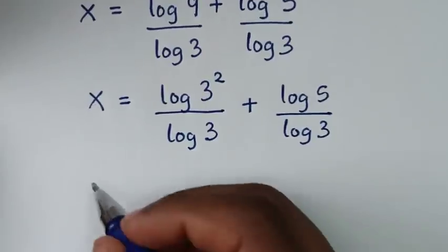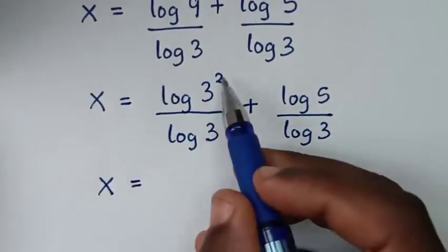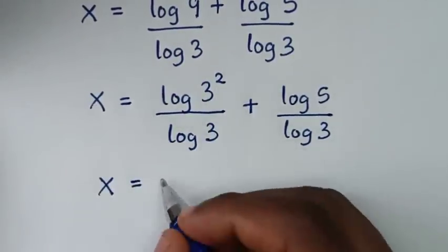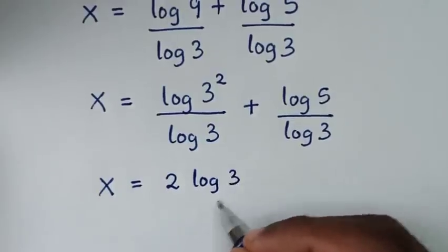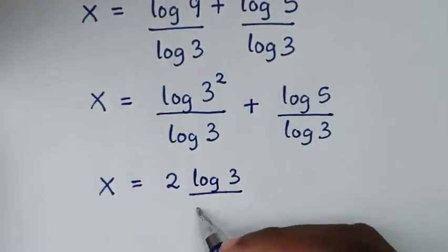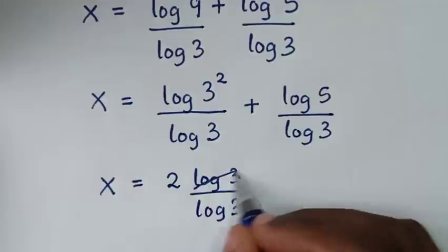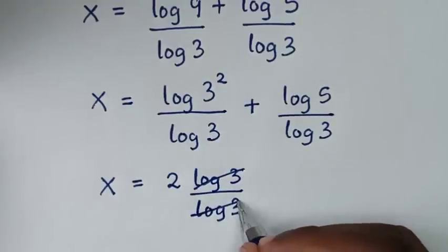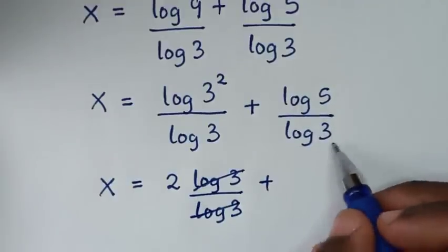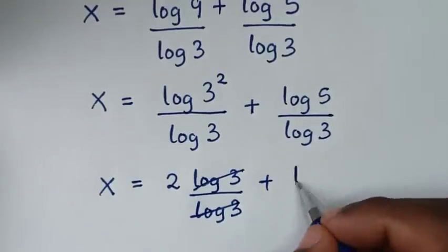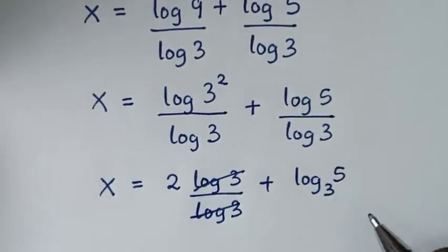In the next step, x is equal to — from this part the power of 2 will move to the base, so it will be 2 log of 3 over log of 3. This log of 3 will cancel this log of 3. Plus, log of 5 over log of 3 is the same as log of 5 base 3.